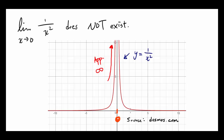And from the right, as we are getting closer and closer to 0, the same thing is happening. The function is becoming 10, 100, 1000, a million, a billion, a trillion — and it's approaching infinity.